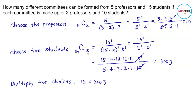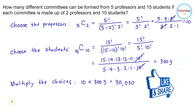So, 10 times 3,003 is equal to 30,030. There are 30,030 different committees that can be formed from 5 professors and 15 students if each committee is made up of 2 professors and 10 students.